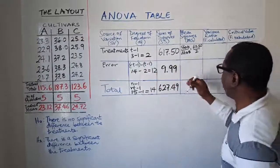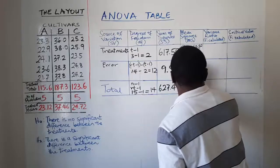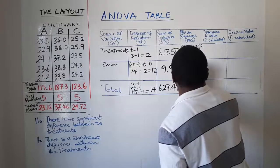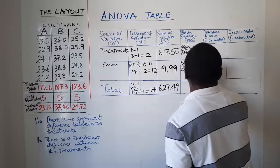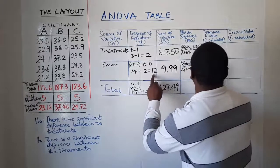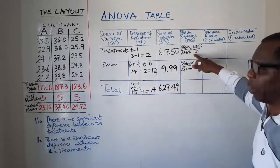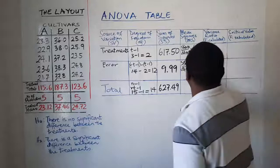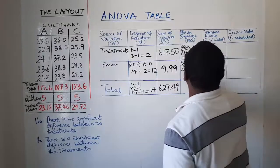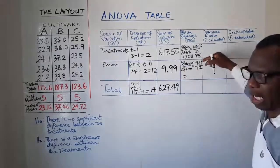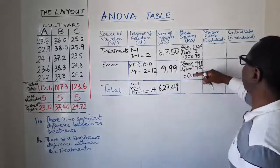Similarly for error it is SS for error divided by DF for error. That is 9.99 divided by 12. So when you evaluate this it gives you 308.75. That's the first one there. And the second one will give you 0.83. That's what this one gives you.